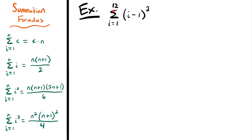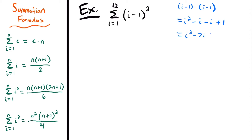Next we have the summation from i equals 1 to 12 of the quantity (i minus 1) squared. To solve this, we need to expand by multiplying (i minus 1) by itself. Using FOIL: i times i is i squared, i times negative 1 gives minus i, negative 1 times i gives another minus i, and negative 1 times negative 1 is positive 1. So this rewrites as i squared minus 2i plus 1.